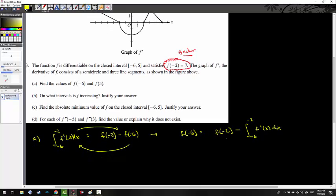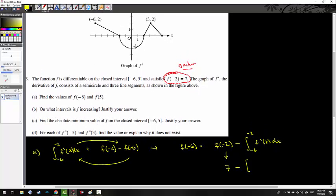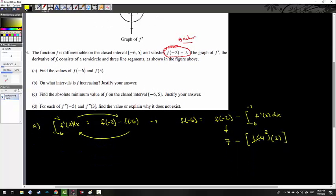And what that's going to get me is f(-2) minus f(-6). And since I'm going to try to solve for f(-6), I will do some algebraic manipulation. So that means f(-6) is going to be equal to f(-2) minus the integral from -6 to -2 of f'(x) dx. Well, I know what some of this stuff is. This dude is 7. And this is going to be minus whatever this integral plays out for me.